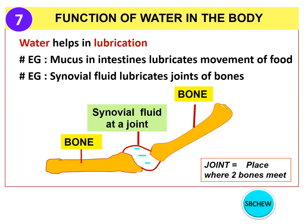We will look at a few more general functions of water not related to any specific property. Water helps in lubrication — for example, mucus, which contains a lot of water, lubricates the movement of food through the intestines, reducing friction. Another example is synovial fluid at the joints, the meeting place between two bones, which contains water and lubricates the joints to reduce friction and pain during movement.